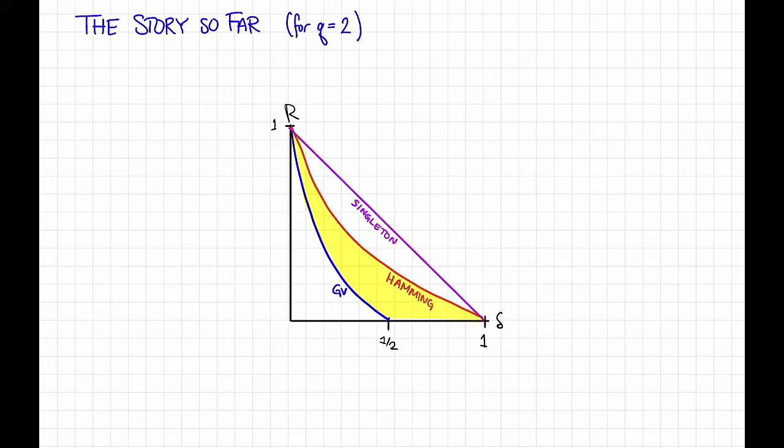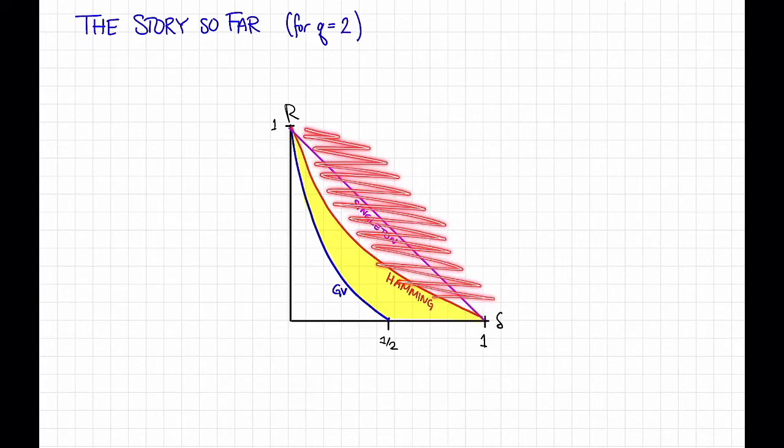So we saw the Hamming bound and the singleton bounds. These are impossibility results. They say that these trade-offs between rate and distance, up here, are not achievable.